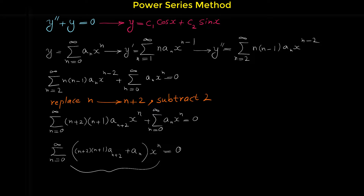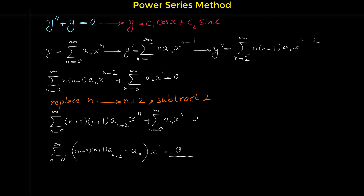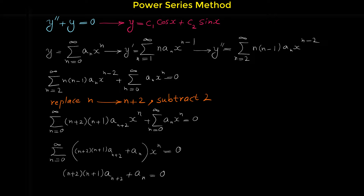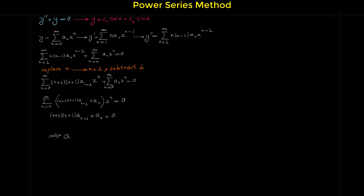Because this sigma equals 0 for every x, we set the coefficient of x to the n equal to 0. From that we get the recurrence relation: n plus 2 times n plus 1 times a sub n plus 2 plus aₙ equals 0. Solving for a sub n plus 2, we move aₙ to the right and divide by n plus 2 times n plus 1, giving a sub n plus 2 equals negative aₙ over n plus 2 times n plus 1.